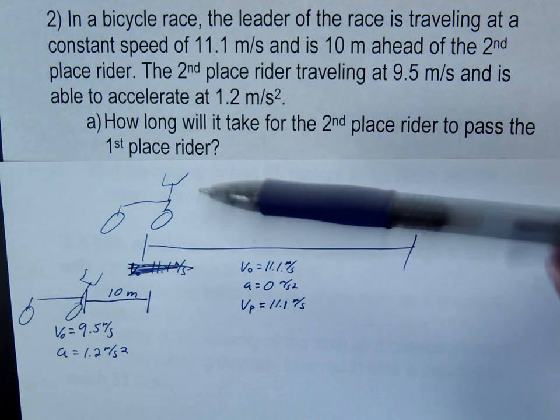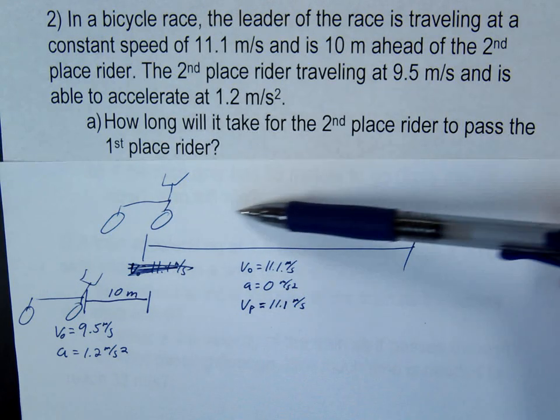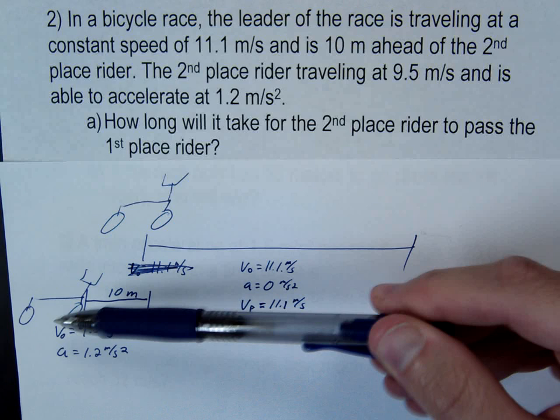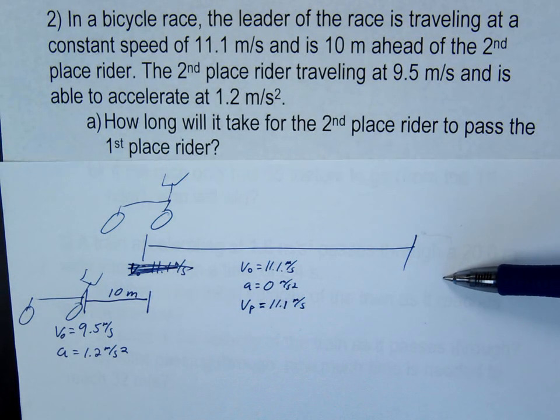Alright, so here's the problem, here's the situation. We have one bike rider here. He's going to be moving at a constant speed. So he's in the lead. He's moving at a constant speed. We have the second place bike rider here. He's going to try to catch up and pass the first bike rider.